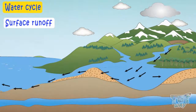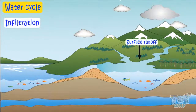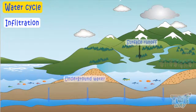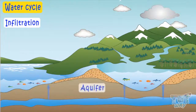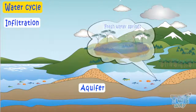Not all runoff flows into rivers. Much of it soaks into the ground as infiltration. Some groundwater finds openings in the land surface and comes out as fresh water springs.